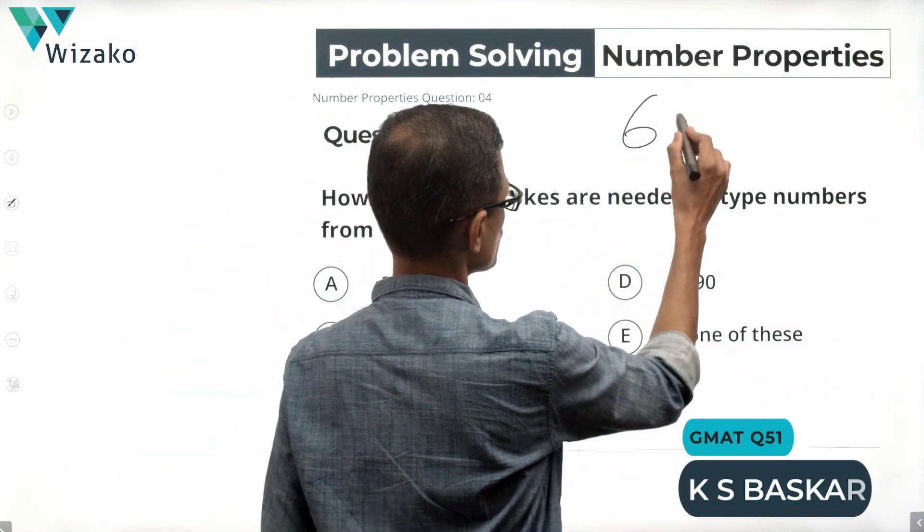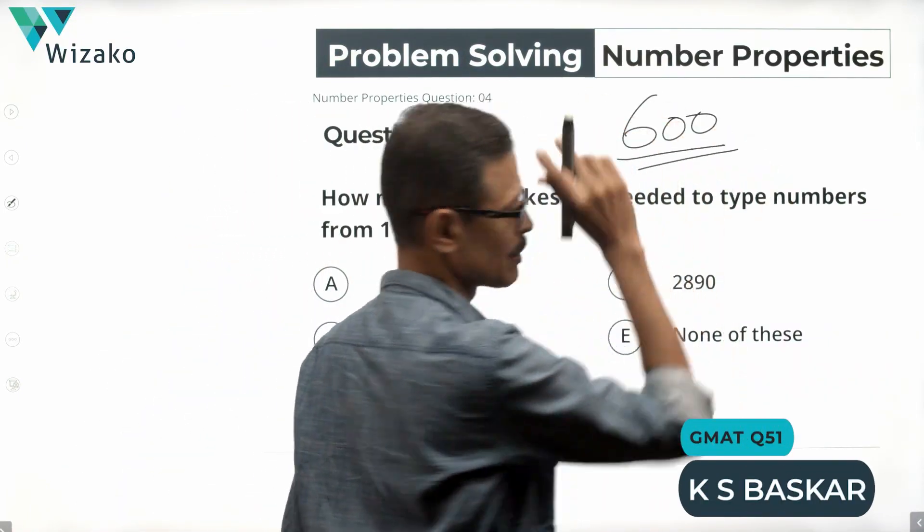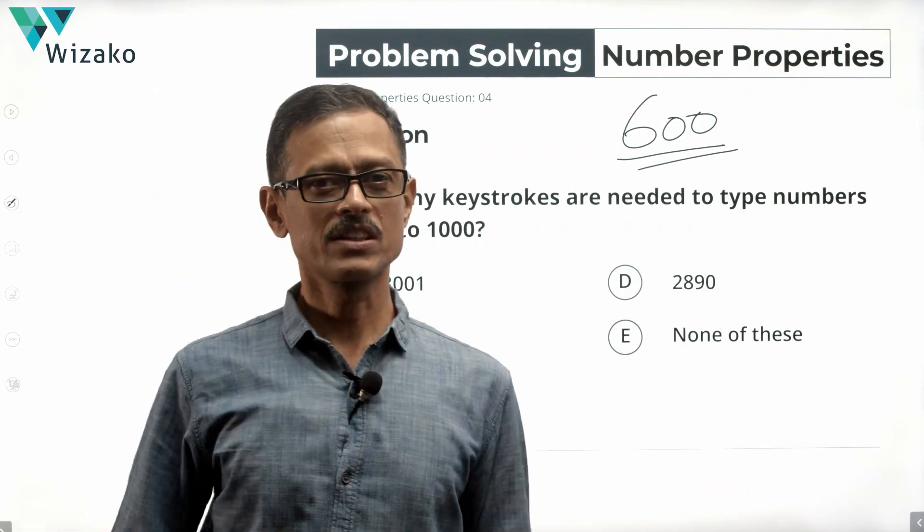Hi everyone, this is an easy question. I'll classify this one as a GMAT 600 level problem solving question. Number properties, counting methods question.